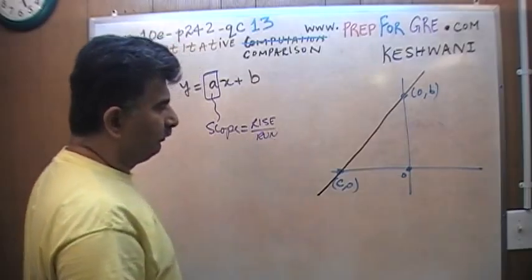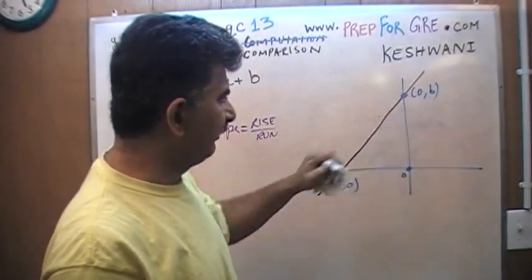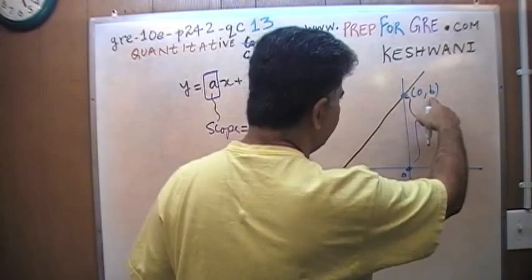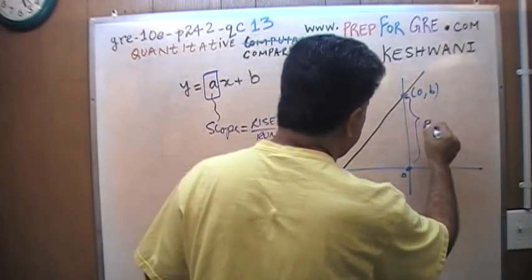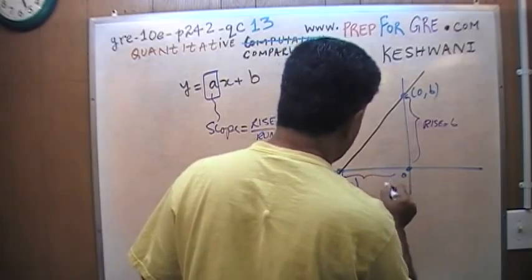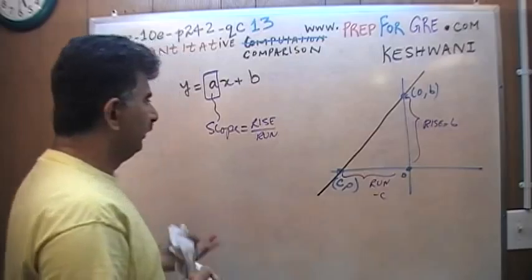This quantity that you see here, this A, what does that represent? For those of you who know what I'm talking about, it represents a slope. But what is the slope of this line? How does one find a slope? Slope is rise over run.